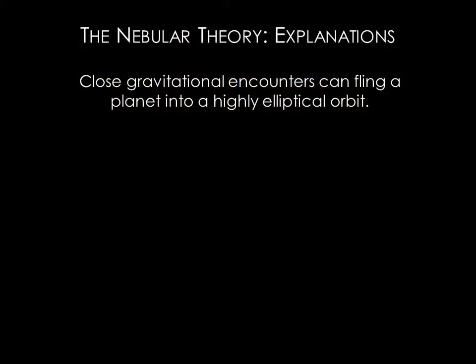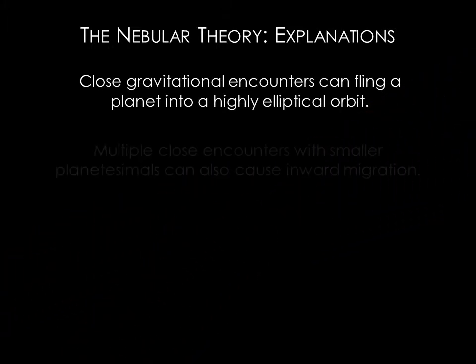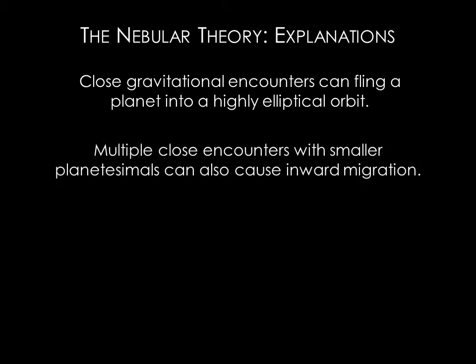The highly eccentric orbits we have observed in extrasolar planets can also be explained by gravitational encounters. A close gravitational encounter between two massive planets can send one planet out of the star system entirely, while the other is flung inward into an elliptical orbit. Repeated encounters can cause significant migration.